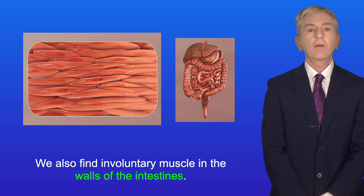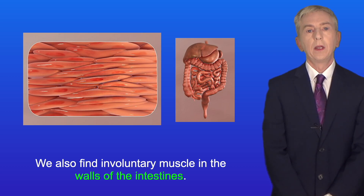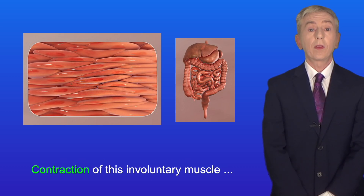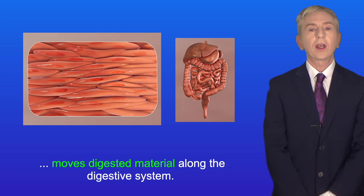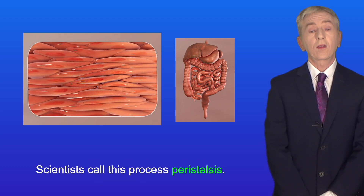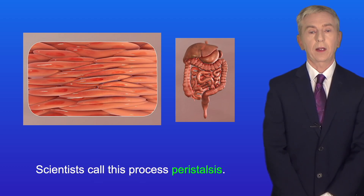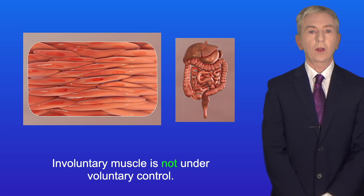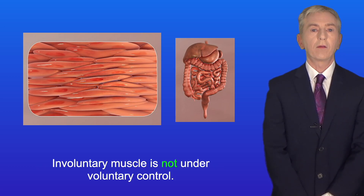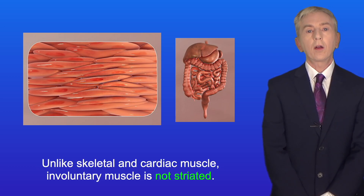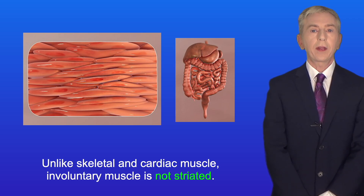We also find involuntary muscle in the walls of the intestines. Contraction of this involuntary muscle moves digested material along the digestive system, and scientists call this process peristalsis. Involuntary muscle is not under voluntary control, and unlike skeletal and cardiac muscle, involuntary muscle is not striated.